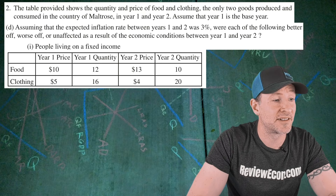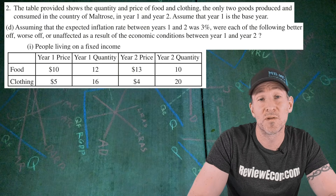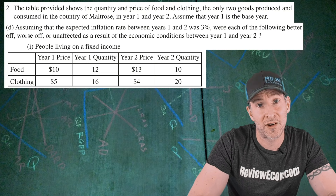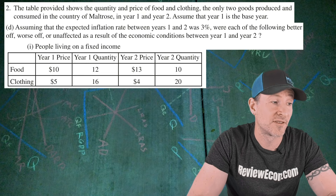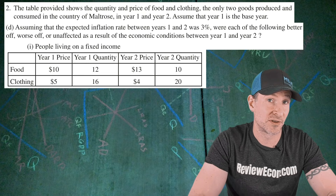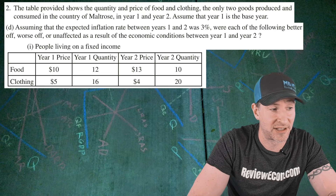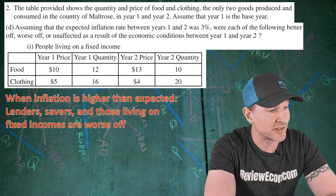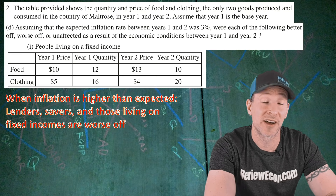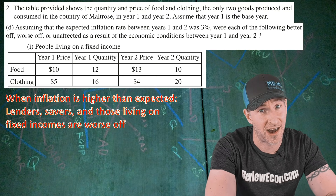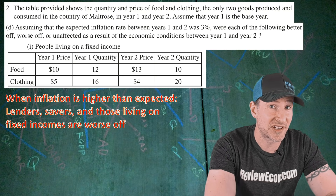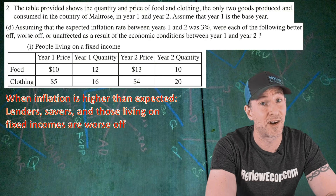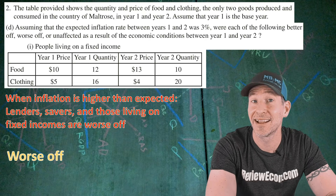For part D, we are told the expected inflation rate between year one and year two was 3%, and we have to say if people living on fixed incomes are better off, worse off, or unaffected as a result of the actual inflation rate we just calculated. Remember, when inflation is higher than expected, lenders, savers, and people living on fixed incomes will be worse off. Since the actual inflation rate was 5% while the expected one was 3%, that means they are worse off. Identify that and you get your next point.